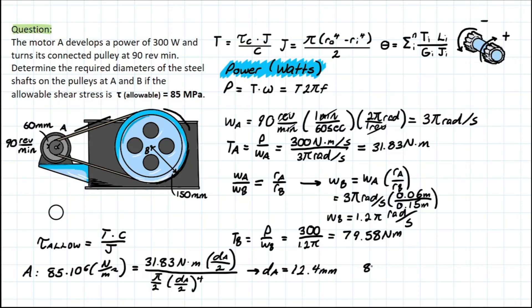And you can do a very similar solving process at B. So if you just write down for B here, we're going to have 85 times 10 to the 6, which is equal to the torque that we solved for B, 79.58 dB over 2 over that polar moment of inertia once again, to the power of 4. Solving for dB leaving us with 16.8 millimeters at the end. Leaving you with two final answers.